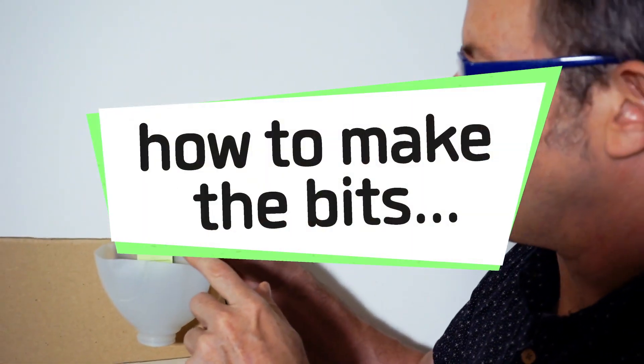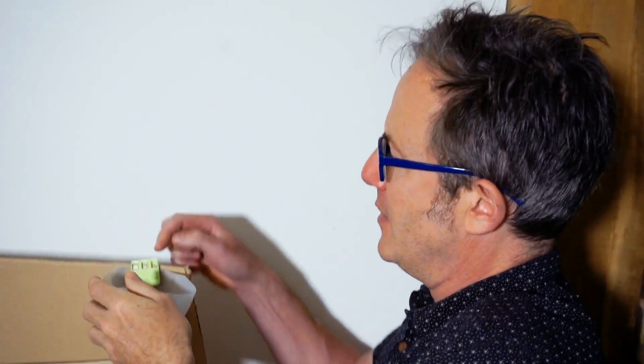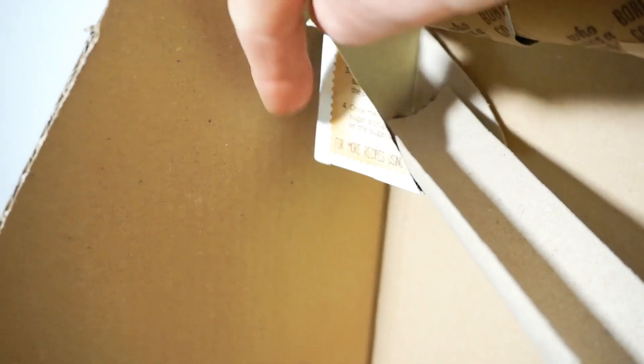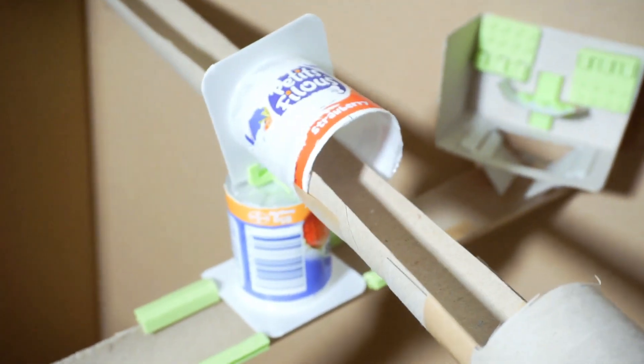So what we have is a bit of milk bottle held on just clipped on here with one of our clips like that. Here we've just used a corner of a soup carton tetra pack. This is our crossroads where the two tracks run across each other.